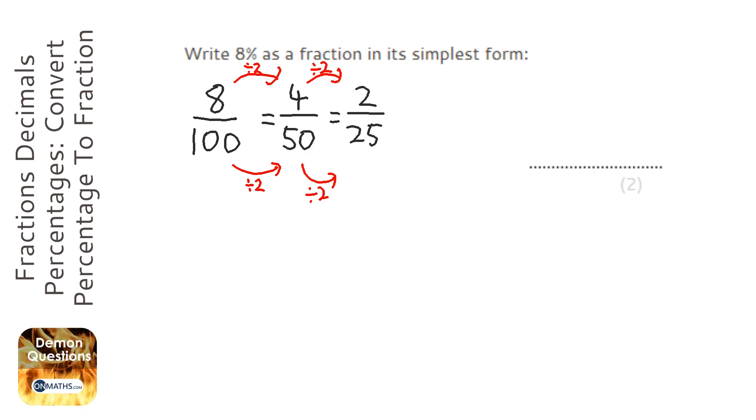Now 2 over 25, I can't simplify that anymore. Now I could have gone straight from the first number to here by dividing top and bottom by 4, and that would have absolutely worked as well. Either way, you get 2 over 25 as your answer.